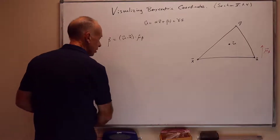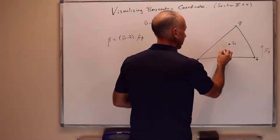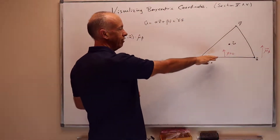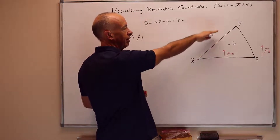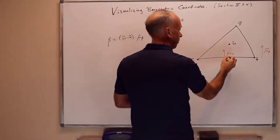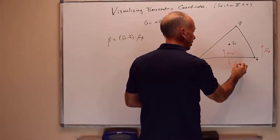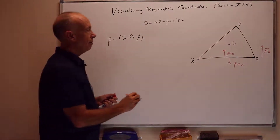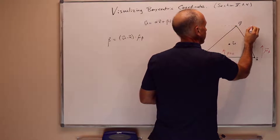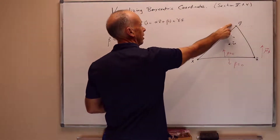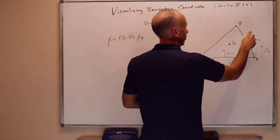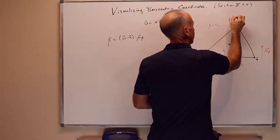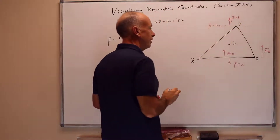This means that for points above the line xz, the beta values are all going to be greater than or equal to zero. In other words, if u is on the line containing xz or above, beta will be greater than or equal to zero. For points u below that line, beta will be less than or equal to zero. We know the barycentric coordinates for y — that is, u equals y — are (0, 1, 0). So this line here is where beta equals one, and above it, beta is greater than or equal to one.